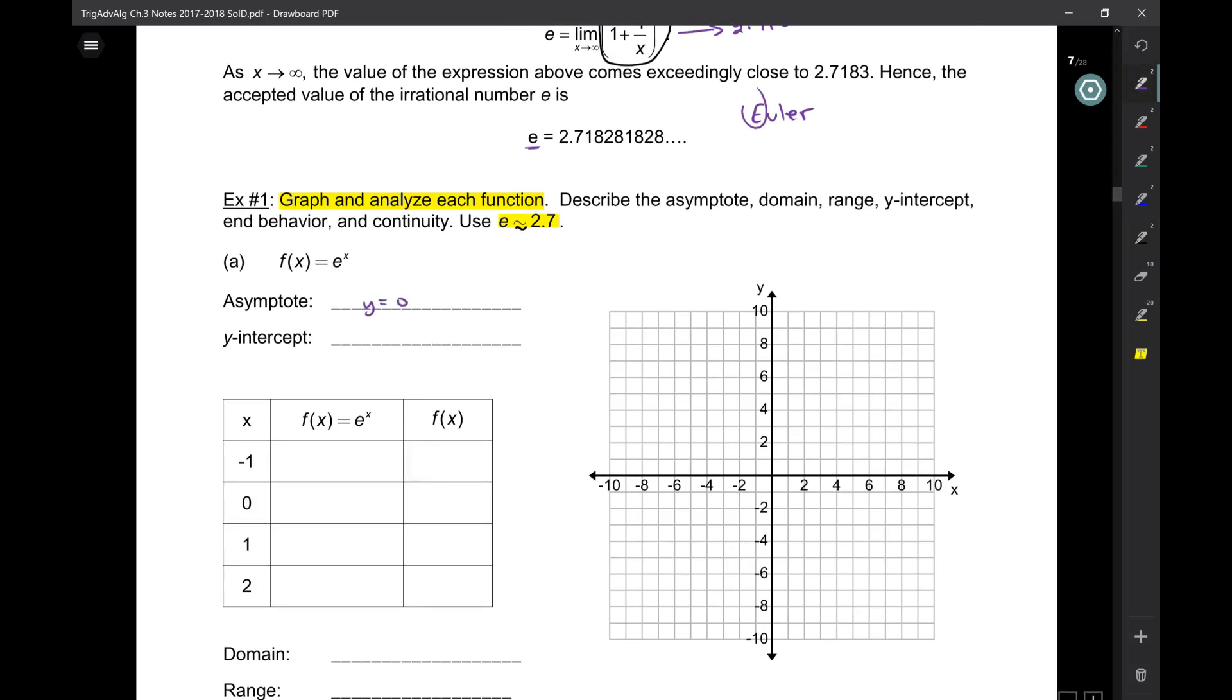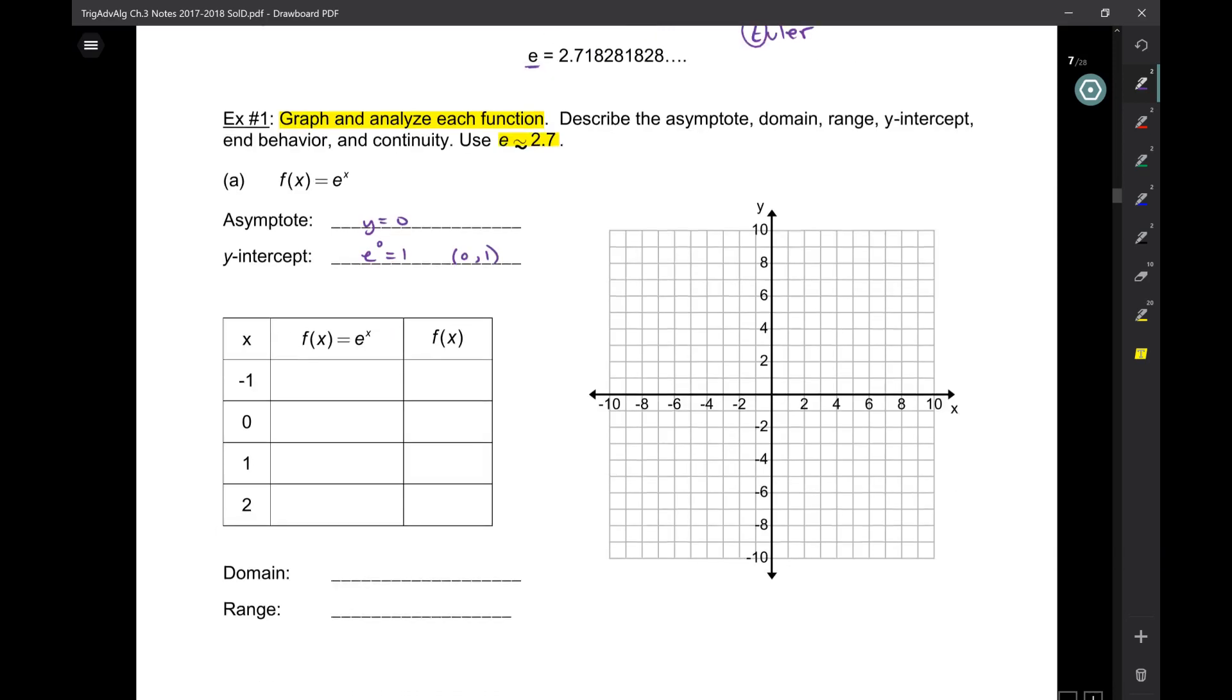y equals 0, the y-intercept, e to the 0, which is 1. Nothing has changed, e is still a number, e to the 0 is 1, so it's 0 and 1. Now here we're gonna do e to the negative 1, e to the 0, e to the 1, e to the 2.